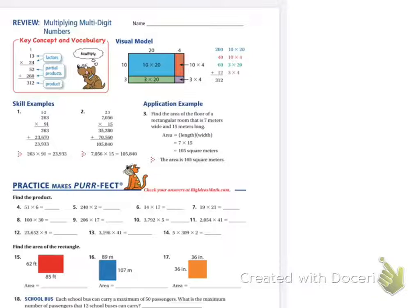Okay, so today we're looking at multiplying multi-digit numbers. We are going to start off with number 5 as an example, even though that is not one of your assigned problems. Number 5 says we have 240 times 2. Where do I start with that?